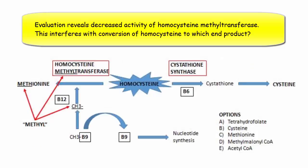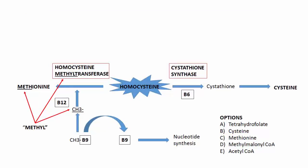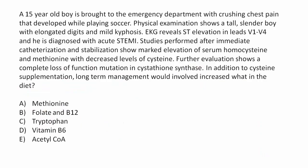This is a straight knowledge question. Looking at our pathway, we're talking about the left side. This patient lacks homocysteine methyltransferase, which produces methionine — option C. As a mnemonic, if you're asking which direction you're heading: on the right-side pathway it's all 'cyst-' words, and on the left-side pathway it's all methionine — methyltransferase, methyl. That's another way to think about it.